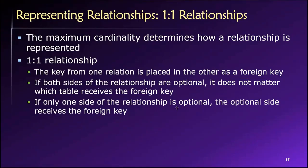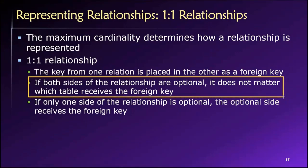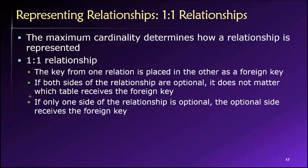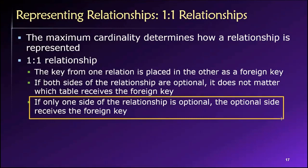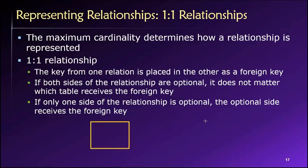A one-to-one relationship is defined by the maximum cardinality, but we also need to consider minimum cardinalities, which can be zero or one. Based on whether the minimum cardinality is zero or one, that will tell us where to put the foreign key. If both sides of the relationship are optional — that is, the minimum cardinality in both directions is zero — then it doesn't matter where you put the foreign key. You can put it anywhere that feels natural. However, if only one side is optional, then the optional side receives the foreign key.